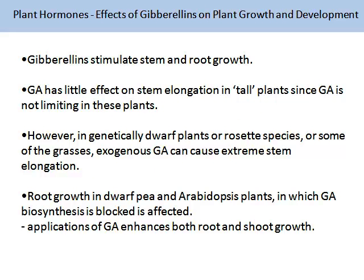Gibberellins can stimulate stem and root growth. GA has little effect on stem elongation in tall plants, since GA is not limiting in these plants. However, in genetically modified dwarf plants, rosette species, or some grasses, GA applied to the plant can cause extreme stem elongation. Root growth in dwarf pea and Arabidopsis plants in which GA biosynthesis is blocked is affected. Applications of GA enhance both root and shoot growth.